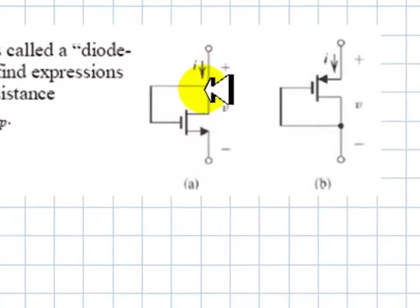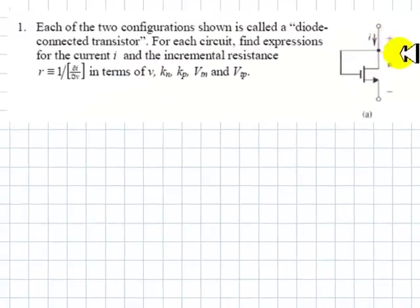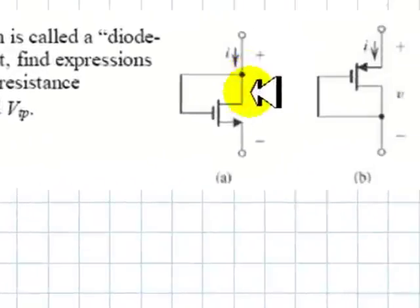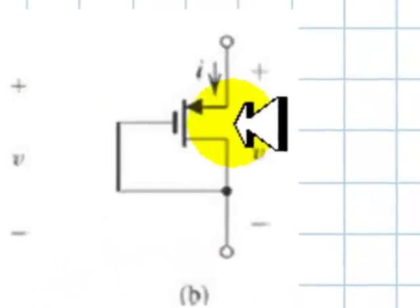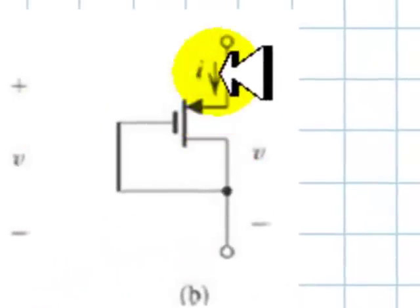As a function of the voltage V, of KN and VTN as well, and the same for this P channel transistor.